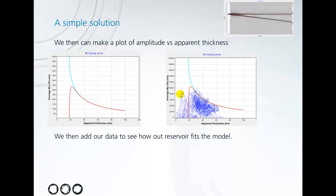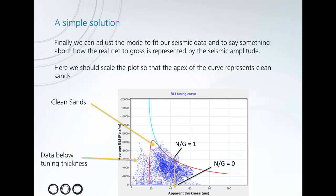In this example we can see that there are some points that are outwith our tuning curve. We can further adjust this to calibrate against our data to make an improved estimation of net-to-gross. This is done by fitting the tuning curve over the data so that the strong amplitudes are represented at the apex or against this line. This moves the cleanest sands in your reservoir to the top of the net-to-gross scale and then scales the other amplitudes accordingly. Some points here are outwith the tuning curve because they are below the tuning thickness and should be truncated from our calculation of thickness or net-to-gross.